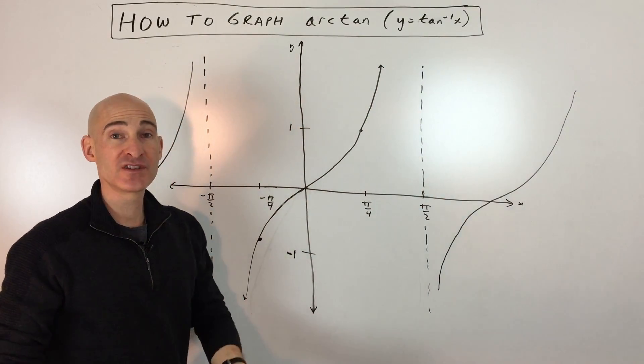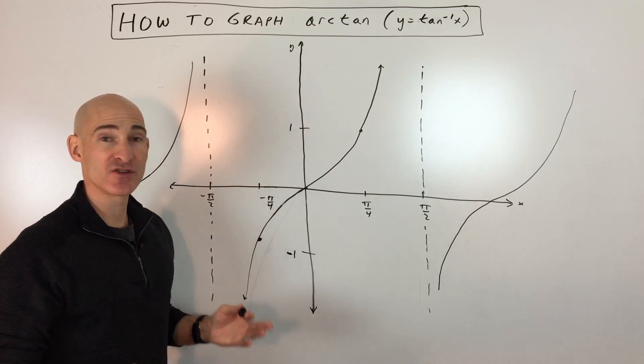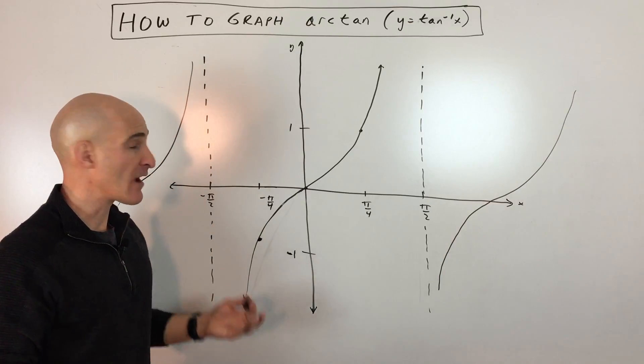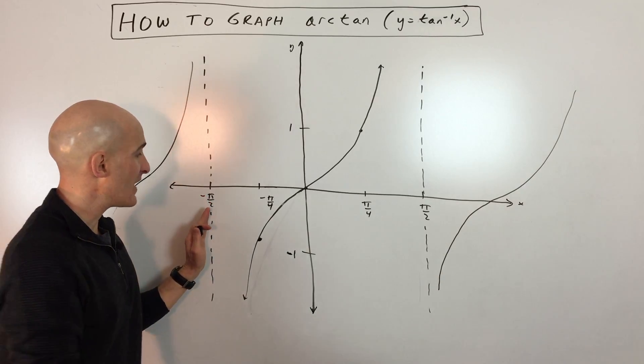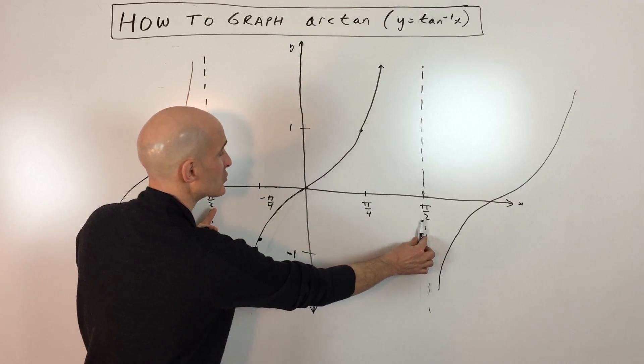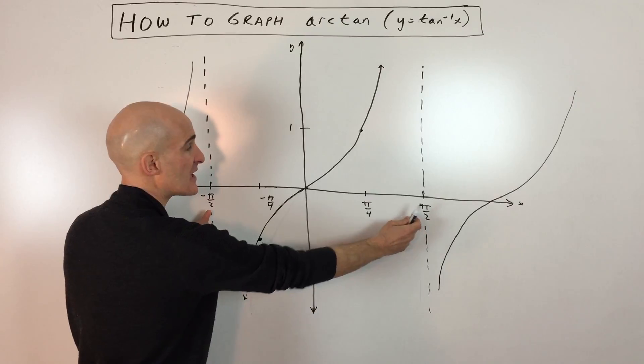So what mathematicians decided to do is to restrict the domain when they're graphing arctangent, and they're restricting the domain from negative pi over 2 to positive pi over 2. This just happens to be one period of tangent.